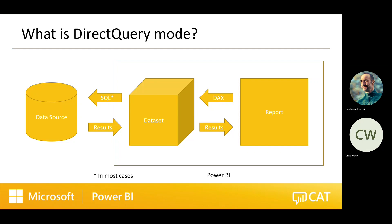You'll notice I very carefully did not say SQL queries. Probably 99% of the time when you're in Direct Query mode your data source is a relational database that speaks SQL, which means the dataset is generating SQL queries in the background — but that's not always the case. For example, Azure Data Explorer, which is a great piece of technology you should absolutely check out, doesn't speak SQL; Power BI generates a query language called KQL when working in Direct Query mode on Azure Data Explorer. There will be other cases where Direct Query mode generates a query language other than SQL.